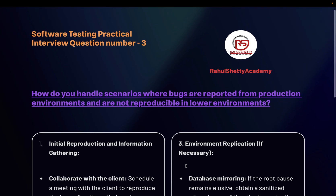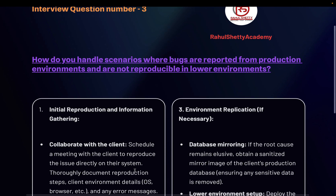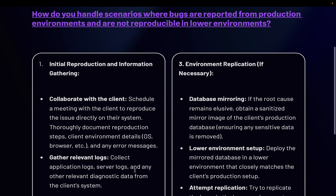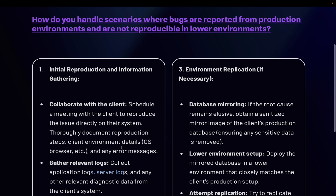This is how you need to answer when someone asks: the issue is in the client's system but not reproducible in your system. Many people give weak answers like 'I will retry in a new browser,' 'I will try incognito,' 'I will check test data,' or 'I will check the internet connection.' Those are not strong answers. A really experienced person should speak systematically: how do you start, how do you gather information, how do you set up a meeting, what documentation and logs do you collect, and how do you reach out to the developer.